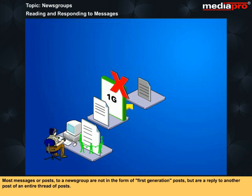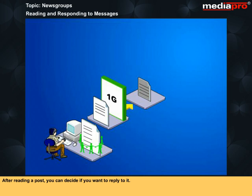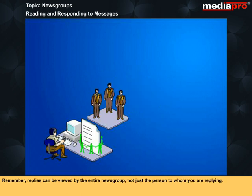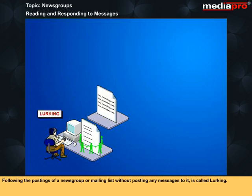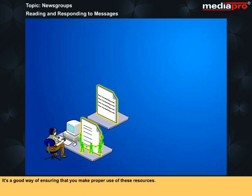Most messages or posts to a newsgroup are not in the form of first generation posts, but are a reply to another post or an entire thread of posts. After reading a post, you can decide if you want to reply to it. Remember, replies can be viewed by the entire newsgroup, not just the person to whom you are replying. It is important that, prior to posting to a newsgroup, you monitor the kinds of messages that are posted to make sure what you had in mind for a reply is appropriate. Following the postings of a newsgroup or mailing list without posting any messages to it is called lurking. It is a good way of ensuring that you make proper use of these resources.